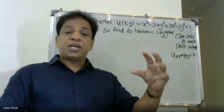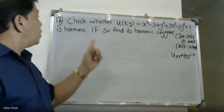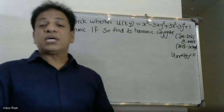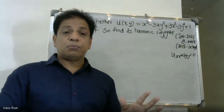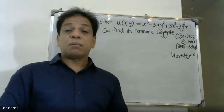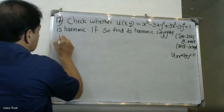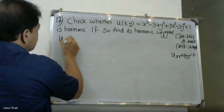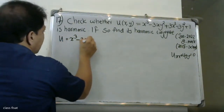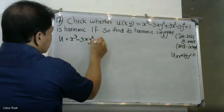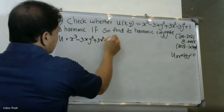We can apply the Cauchy-Riemann equations to find the harmonic conjugate. We are given that u is equal to x³ minus 3xy² plus 3x² minus 3y².